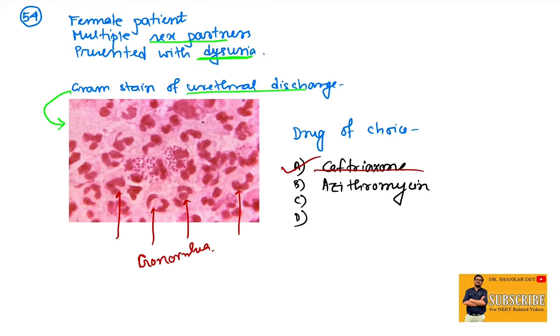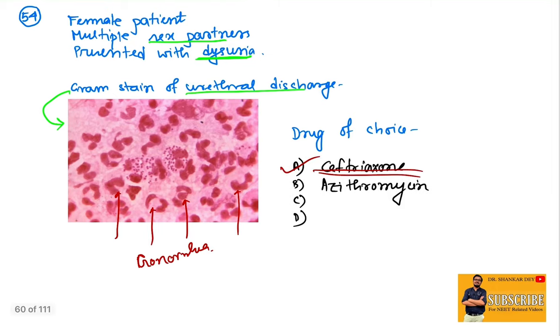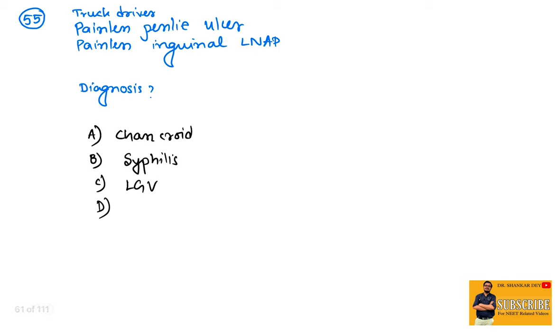Coming to question number 55: truck driver with painless penile ulcer and painless inguinal lymphadenopathy. Diagnosis? Definitely straightforward, it is syphilis. Syphilis ulcer is painless and lymphadenopathy is also painless. In case of chancroid, it is H. ducreyi but it is painful. So the answer will not be chancroid, not lymphogranuloma venereum. The answer will be syphilis.